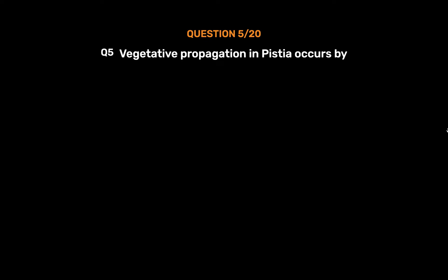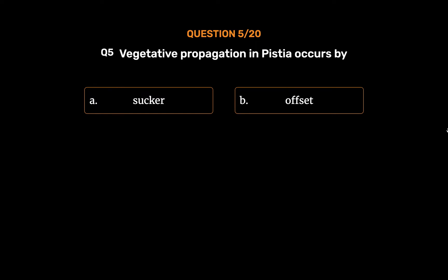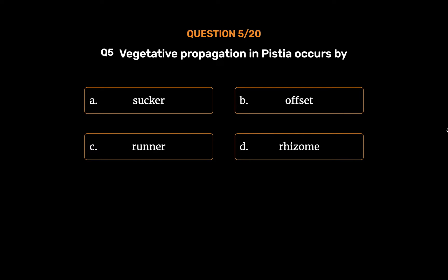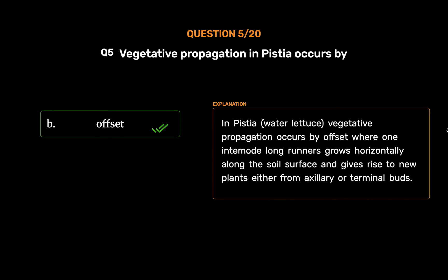Question No. 5: Vegetative propagation in Pistia occurs by. Option A: Sucker. Option B: Offset. Option C: Runner. Option D: Rhizome. The correct answer is Option B: Offset. In Pistia, the water lettuce, vegetative propagation occurs by offset where one internode-long runner grows horizontally along the soil surface and gives rise to new plants either from axillary or terminal buds.